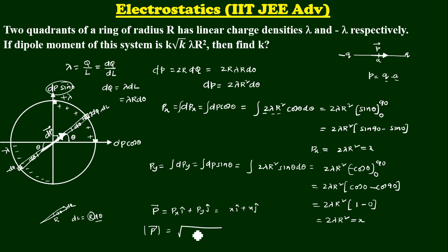Now, if I just find out this magnitude, I will get x square plus x square root of 2 x square root 2 x. What is that x here? 2 lambda R square. Can I write this as 2 root 2 lambda R square. Now, if I compare this equation with k root k lambda R square, I can say k is nothing but a 2. That is the answer.